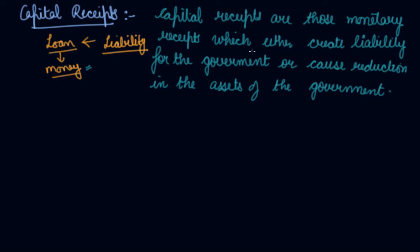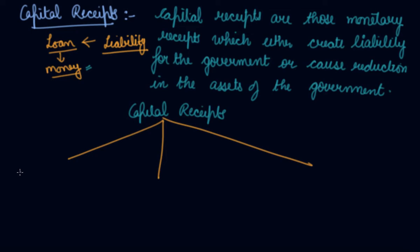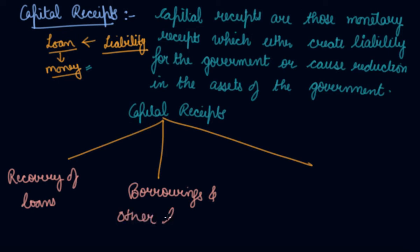These characteristics tell us that capital receipts either create a liability for the government — if the government takes loans — or cause reduction in the assets of the government. For example, if the government is selling its shares of Maruti Udyog, it causes reduction in the asset of the government. Capital receipts are further divided into three types: number one is recovery of loans, number two is borrowings and other liabilities, and number three is other receipts.